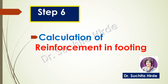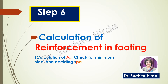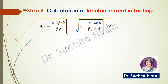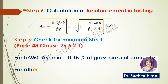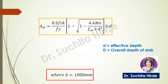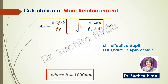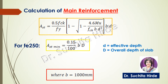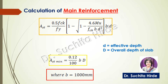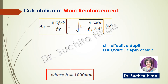The next step is calculation of reinforcement in footing — that means calculating the area of steel on the basis of maximum bending moment, checking the calculated steel for minimum requirement, and deciding the spacing of bars. We will use the standard formula for calculation of main reinforcement. After calculating Ast, we check for minimum reinforcement: for Fe250 steel it is 0.15 of b into d, and for other steels it is 0.12 of b into d. Note that in the Ast formula the effective depth is used, whereas in the minimum Ast formula the overall depth is used.